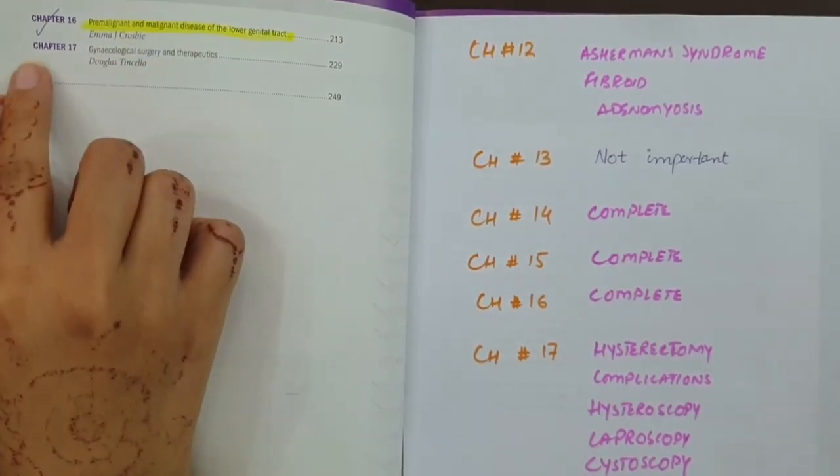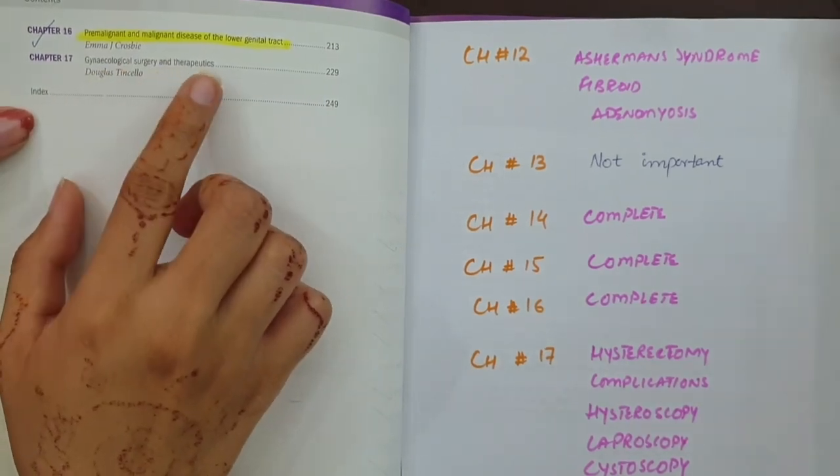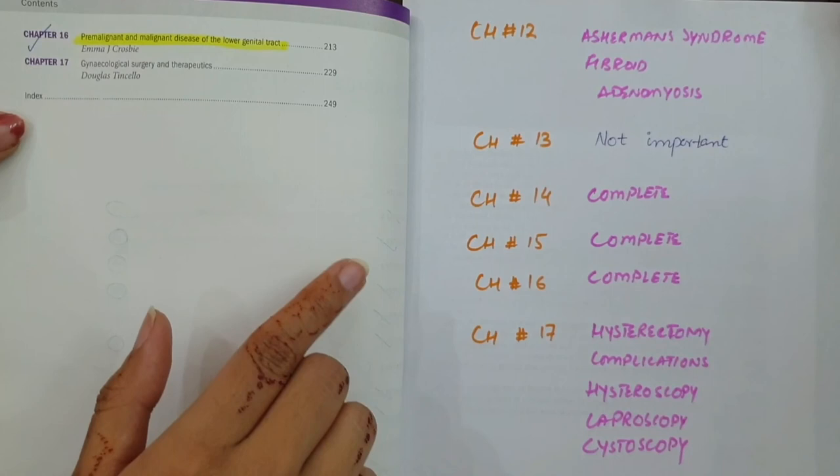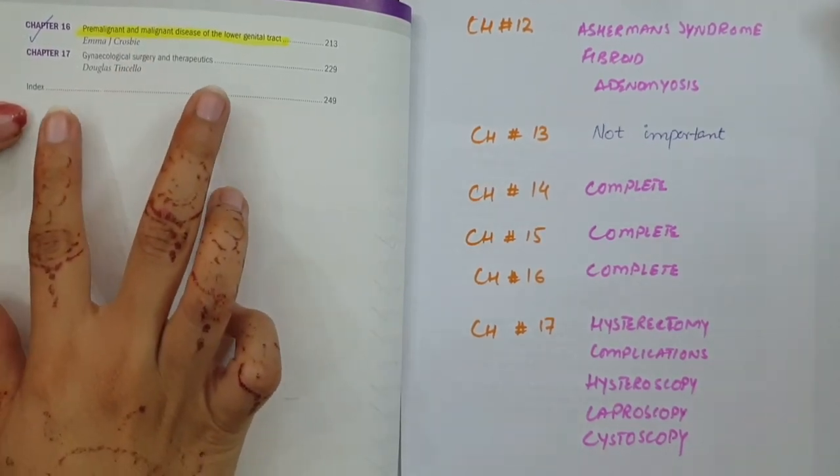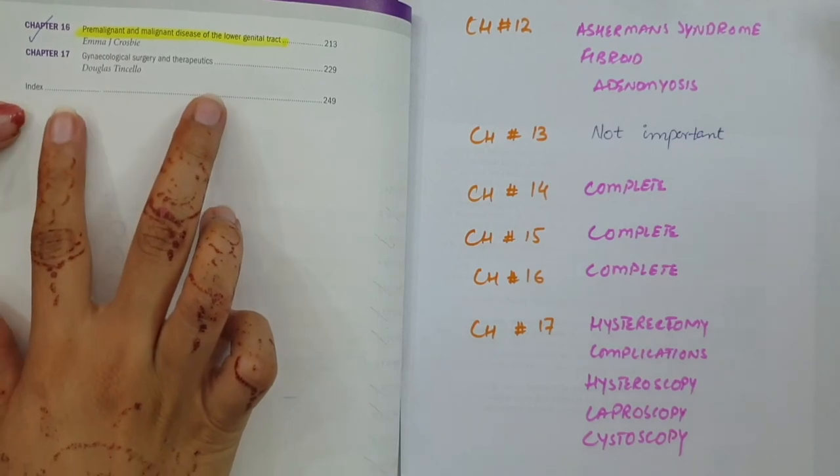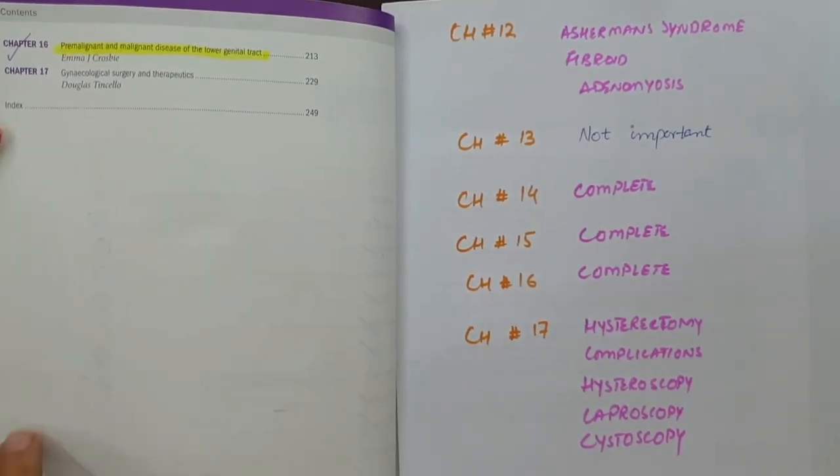Then chapter 17, Gynecological Surgery and Therapeutics. There is no SEQ but there are three things. Hysterectomy - many complications are asked in SEQs or viva voce. And hysteroscopy, laparoscopy, and cystoscopy and viva voce.